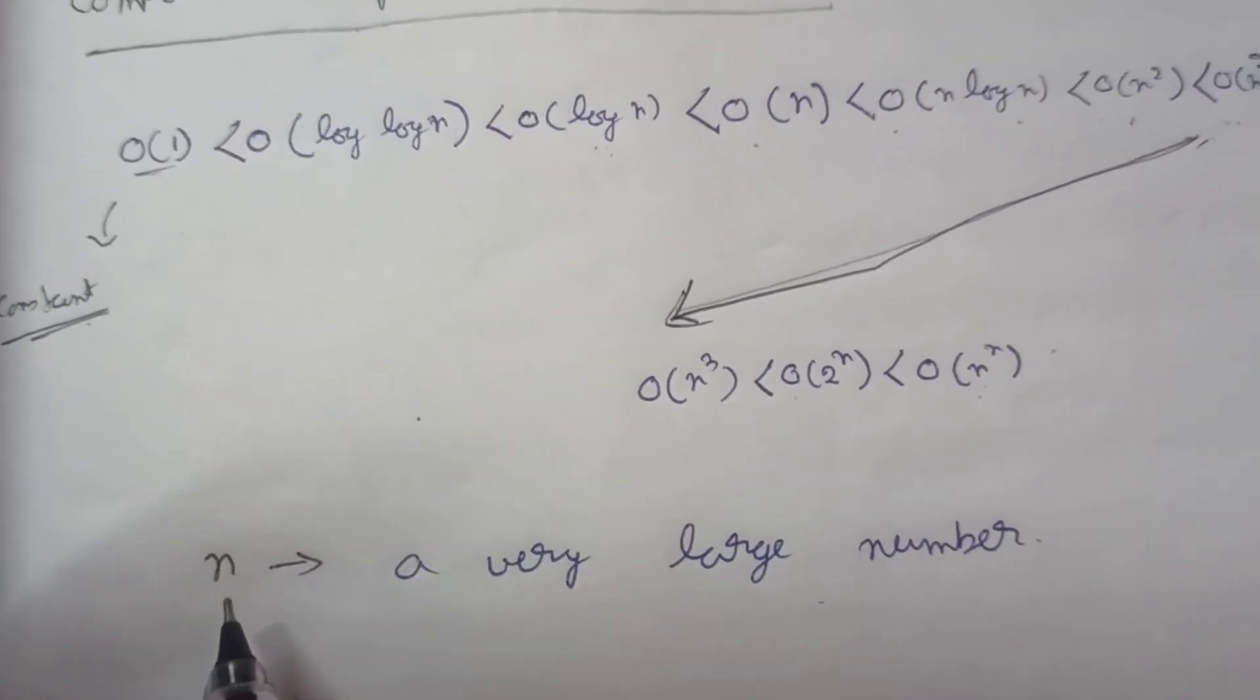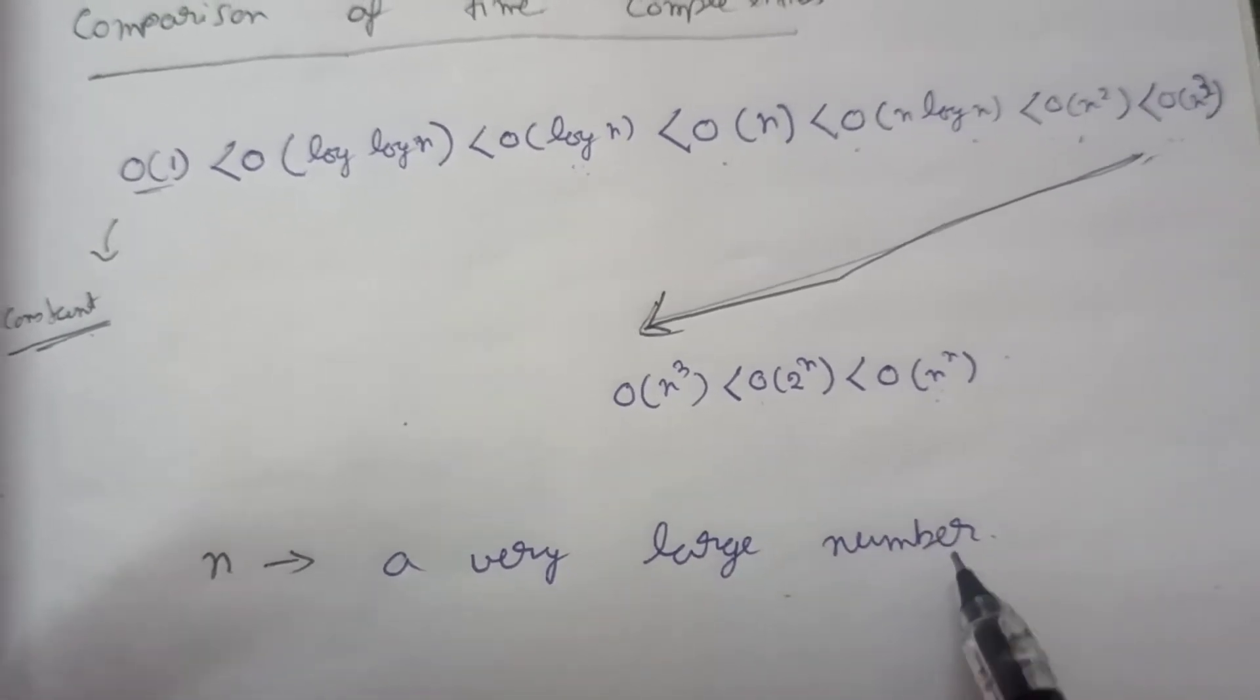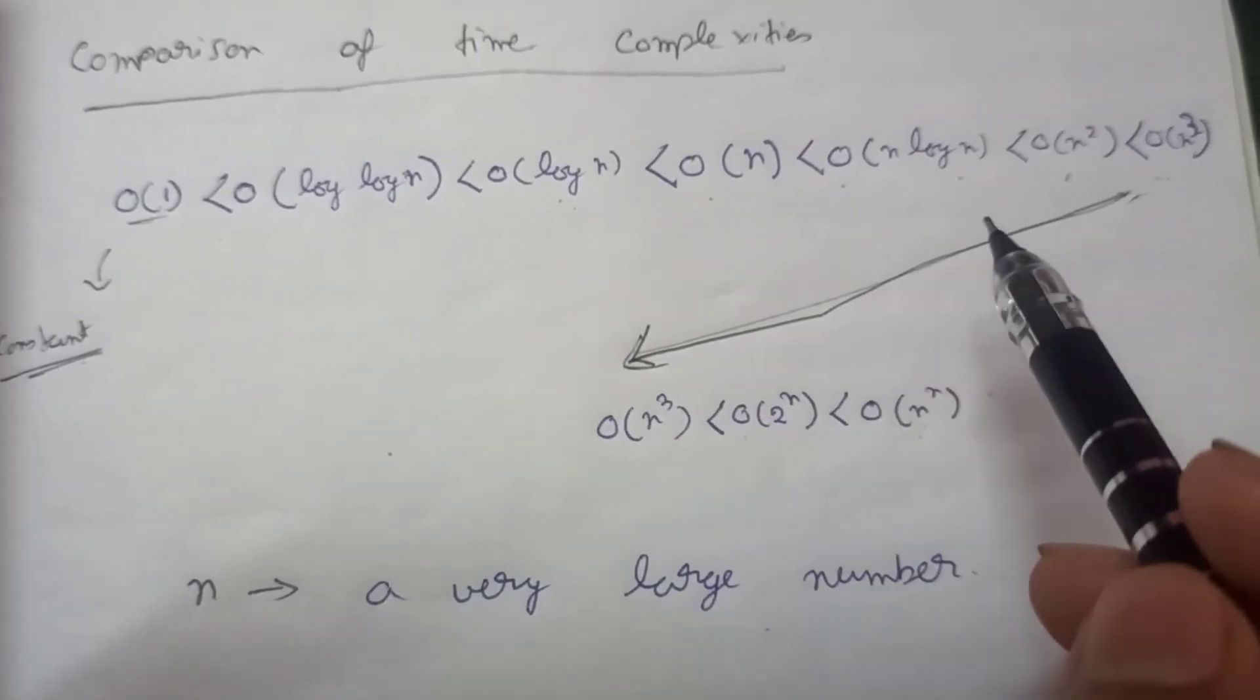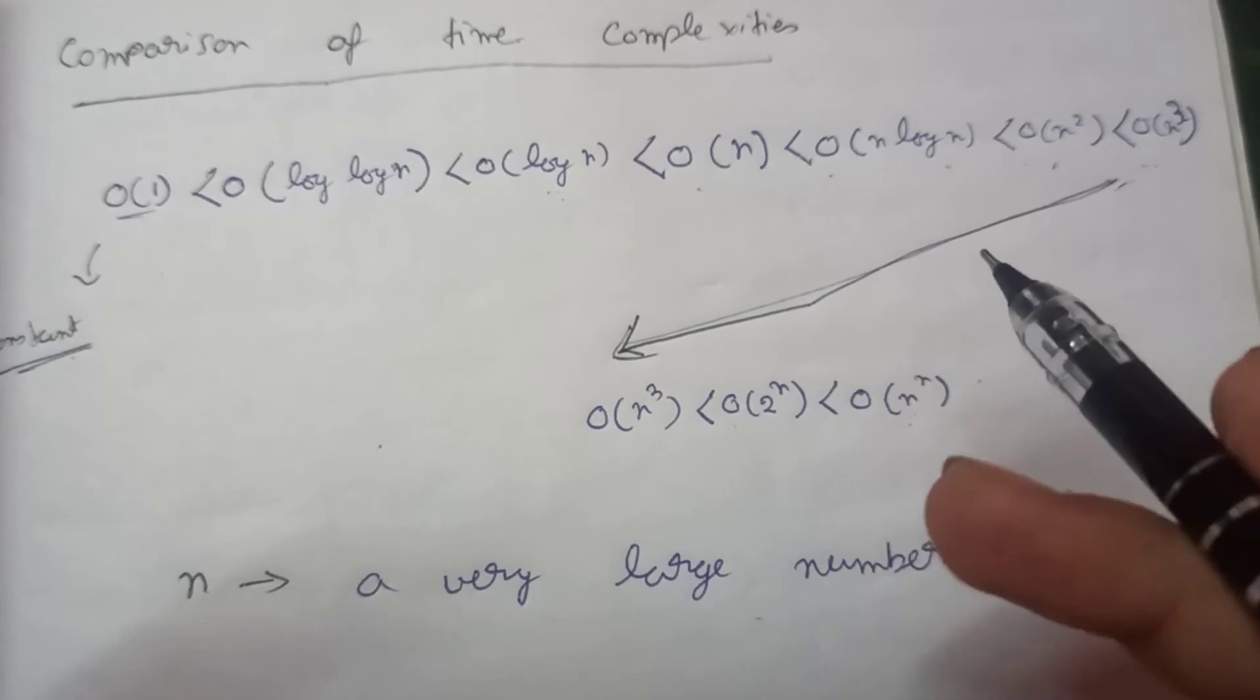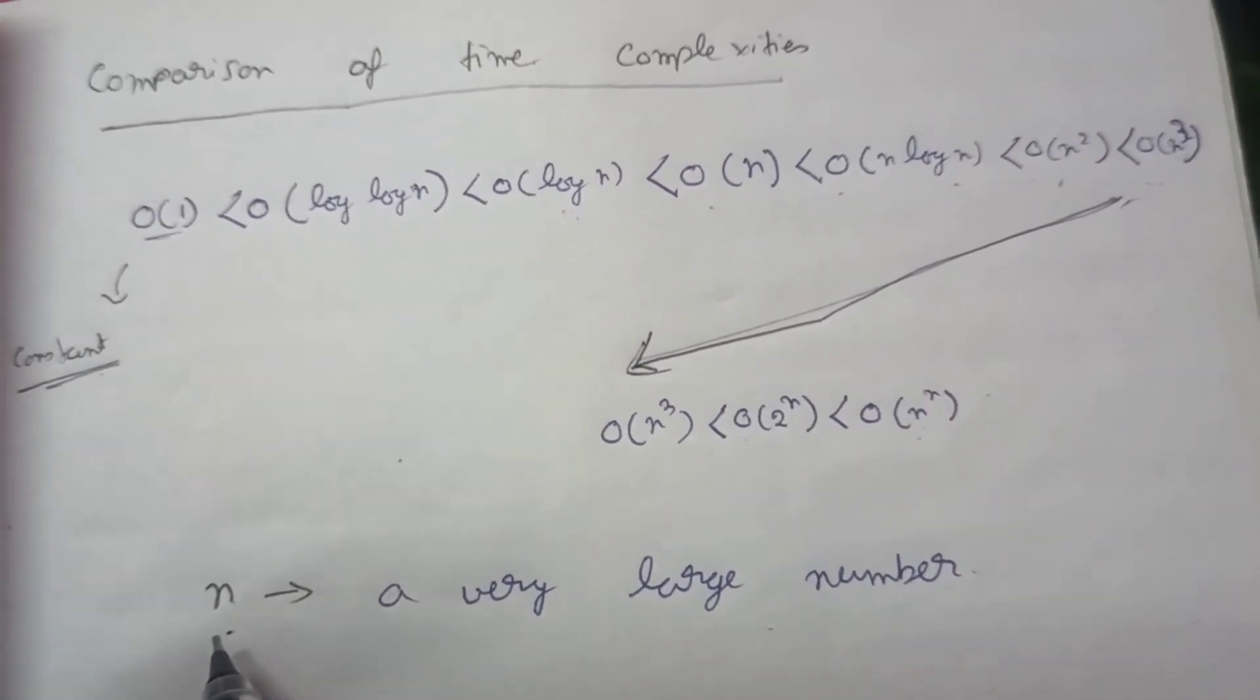And here n is a very large number. We do not consider this type of time complexities and their order for small numbers like 1, 2, 3, 4, this type of inputs. We do them for huge numbers.